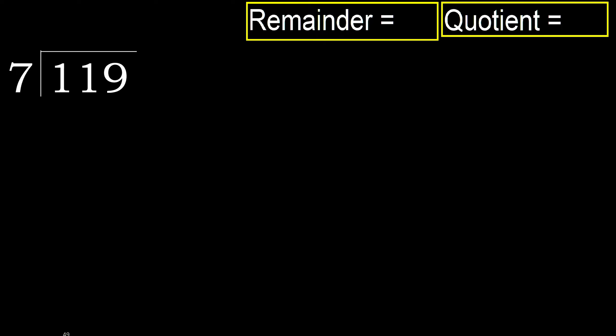119 divided by 7. 1 is less, therefore next. 11 is not less, therefore with 11: 7 multiplied by which number is nearest to 11, but not greater?